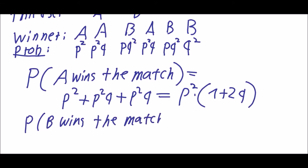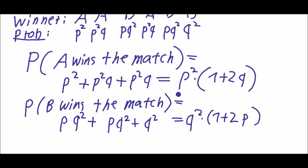And the probability that B wins the match is kind of the same with the opposite letters. So we have P Q squared plus P Q squared plus Q squared which is of course Q squared times (1 plus 2P). And that is the solution for our problem.